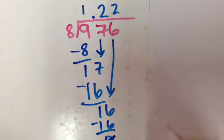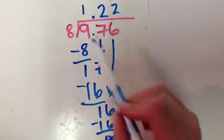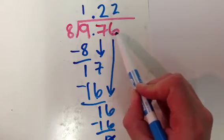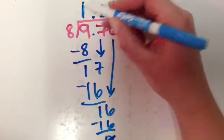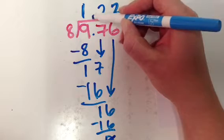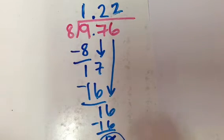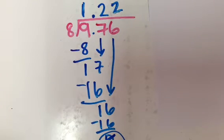Okay? So this is what I'd started out with, 9 and 76 hundredths divided by 8, right? And I find out that the answer is 1 and 22 hundredths. And I come out with no remainder.